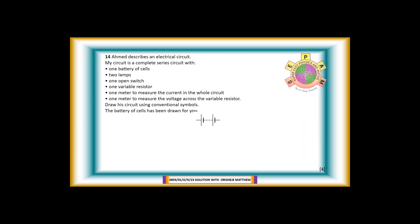Question 14. Ahmed describes an electrical circuit. My circuit is a complete series circuit with one battery of cells, two lamps, one open switch, one variable resistor, one meter to measure the current in the whole circuit, one meter to measure the voltage across the variable resistor. Draw his circuit using conventional symbols. The battery of cells has been drawn for you. This question is for four marks. You get the first mark for drawing the two lamps correctly. You get the second mark for drawing the voltmeter correctly and connecting it in parallel across the variable resistor. You get the third mark for drawing the variable resistor correctly. You get the fourth mark for drawing the ammeter correctly and connecting it in series to the wires.